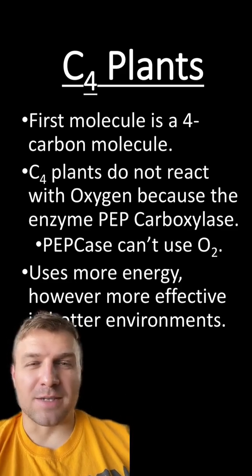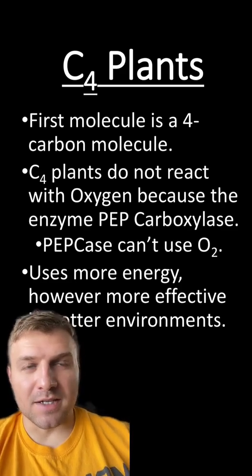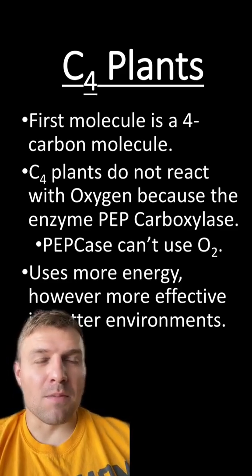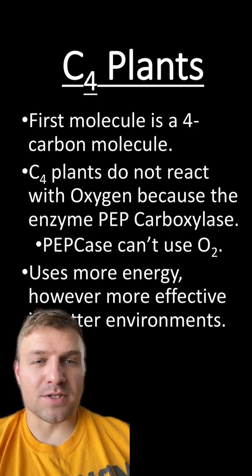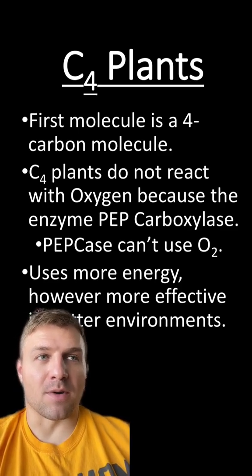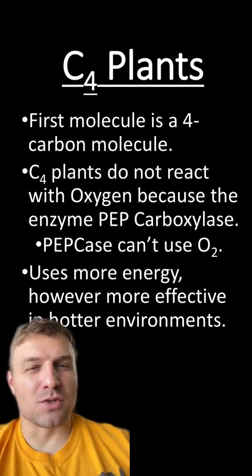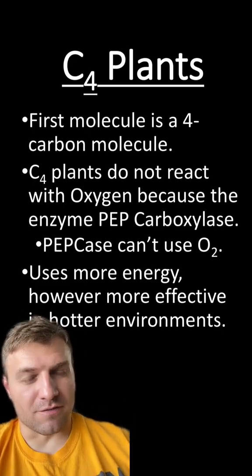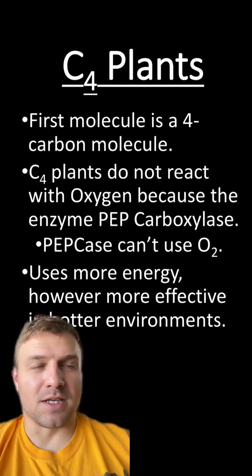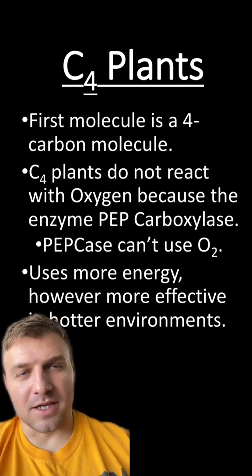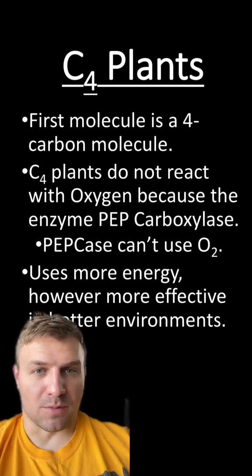I won't dive deep into photorespiration here, but basically there's a problem within C3 plants where RuBisCO is going to take up oxygen instead of CO2. C4 plants will usually live in hotter environments, and they evolved this PEP carboxylase in order not to go through photorespiration.